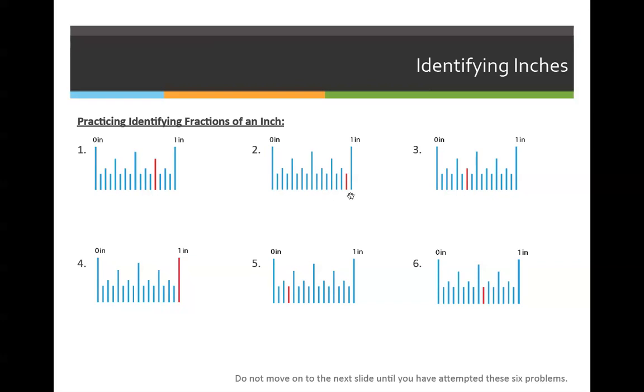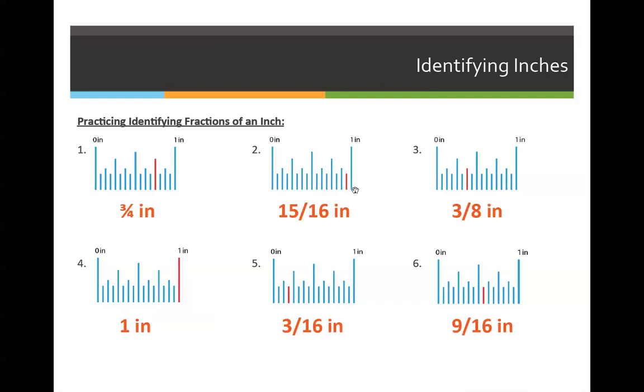The second answer we must first identify is at the 16-inch level, and then count across. So let's go through the answers. The first one is three-fourths. The second one is 15 over 16. The third is 3 over 8. The fourth one is one whole. Number 5 is 3 over 16. And number 6 is 9 over 16.